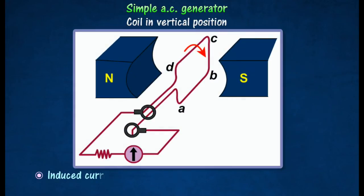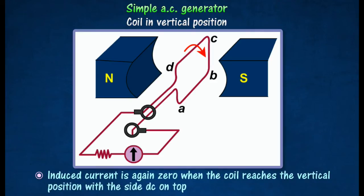The induced current will decrease as the coil continues to rotate and is again zero when the coil reaches the vertical position with the side DC on top.